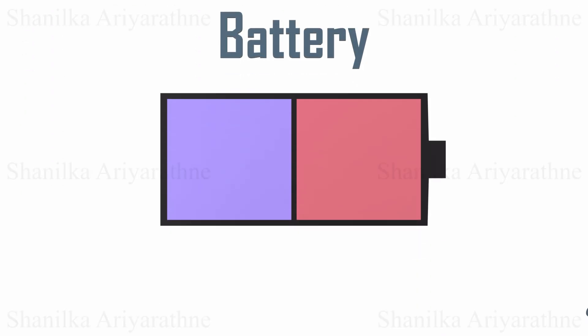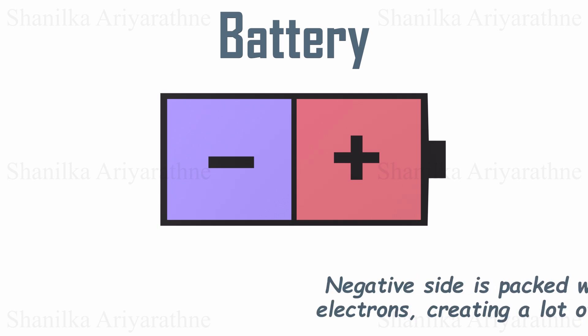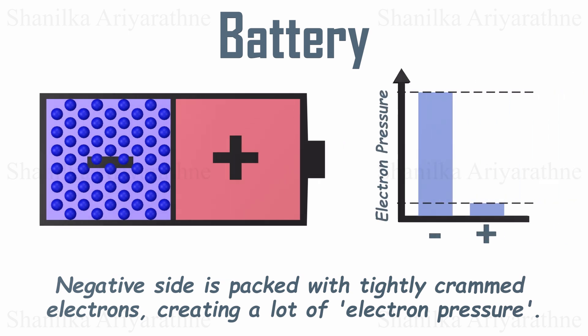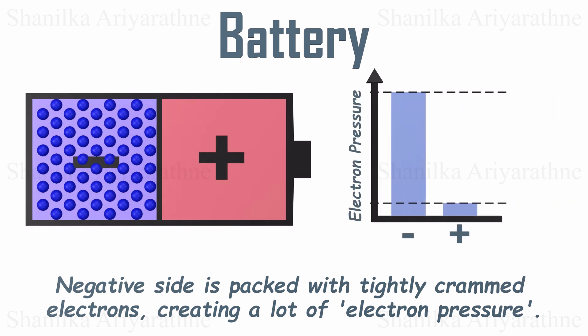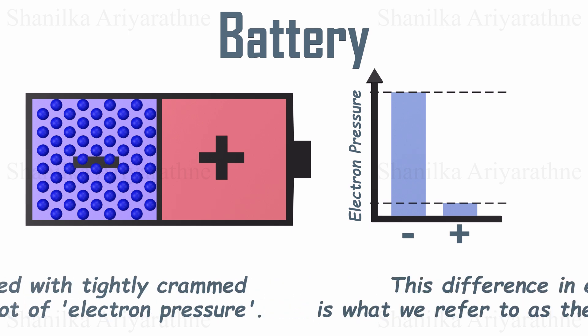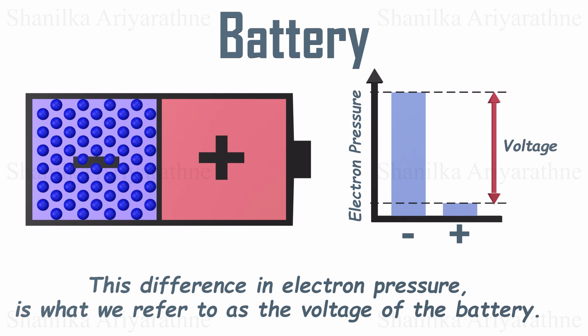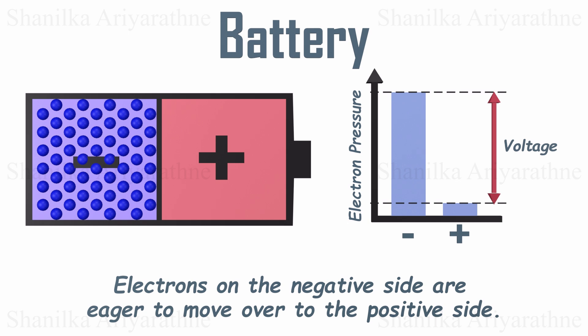Let's start with the basics. Every battery has two terminals, a positive side and a negative side. The negative side is packed with tightly crammed electrons, creating a lot of electron pressure. On the other hand, the positive side has far fewer electrons, resulting in much less electron pressure. This difference in electron pressure, or potential difference, is what we refer to as the voltage of the battery.